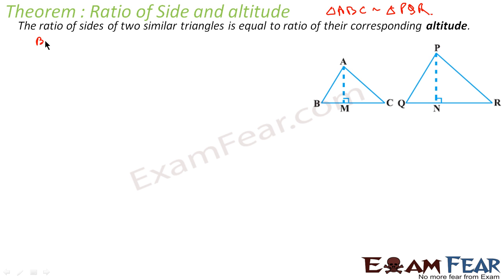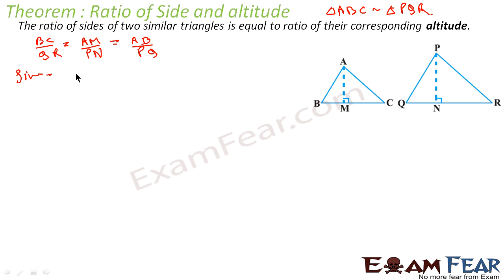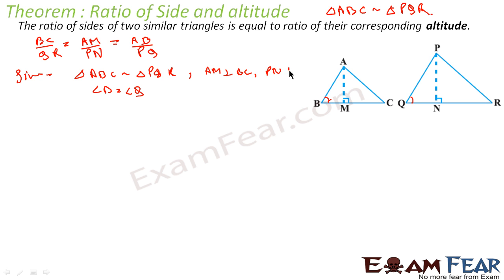We will prove this. We have to prove that the ratio of sides — BC by QR — is equal to AM by PN, where AM is the altitude. Given: triangle ABC is similar to triangle PQR, AM is perpendicular to BC, and PN is perpendicular to QR. From similarity, angle B is equal to angle Q.